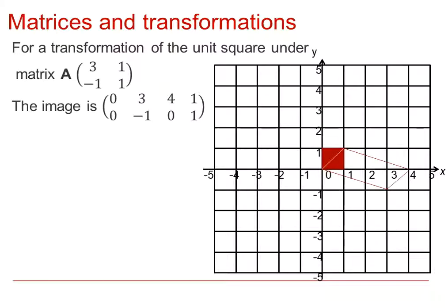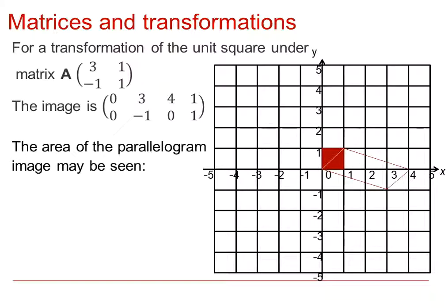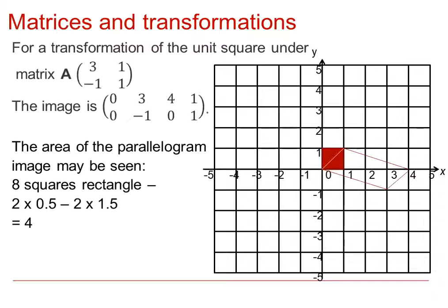In this problem we have a transformation of the unit square under the matrix A, which is 3, −1, 1, 1. The image coordinates are (0, 0), (3, −1), (4, 0), (1, 1). Looking at the area of the parallelogram image, we can calculate it as 8 complete squares for the bounding rectangle and then subtract the triangular bits around the edge. The area of the parallelogram is 4 square units.